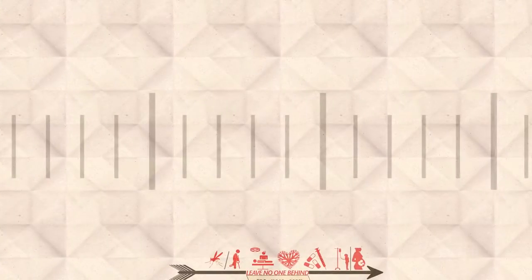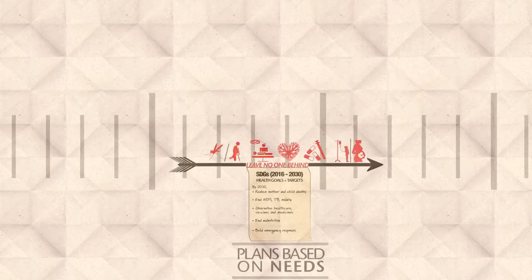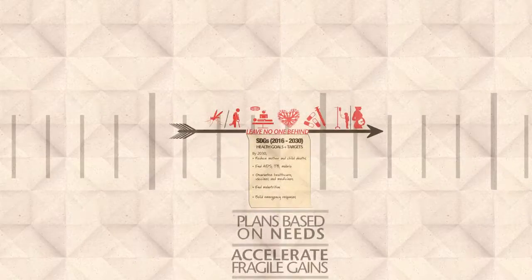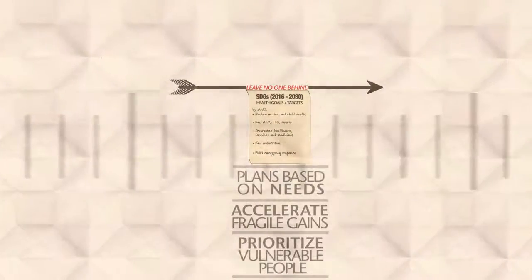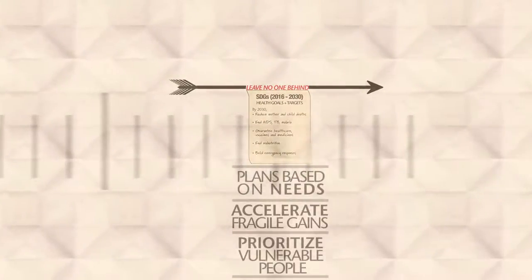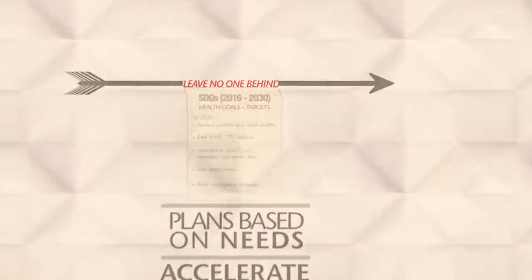So what needs to happen? Plans should be based on people's needs, not on wishful economic schemes. Progress made in health should be built on, not halted. The health of the most vulnerable people should be prioritized. Give people the healthcare they need, not the healthcare they can afford.